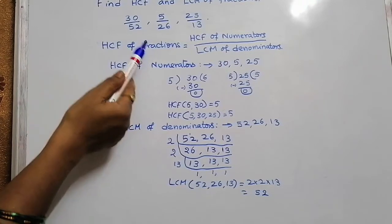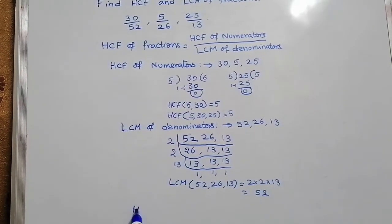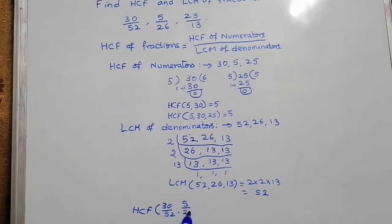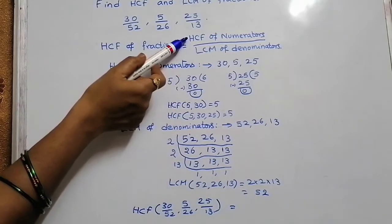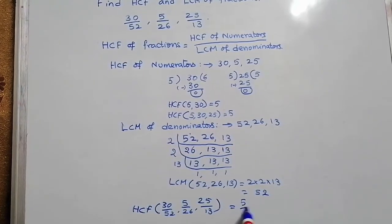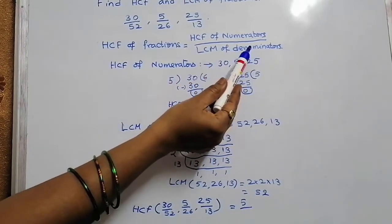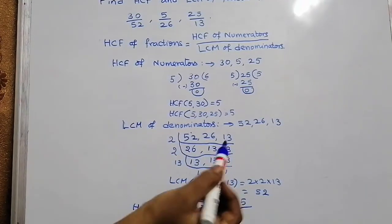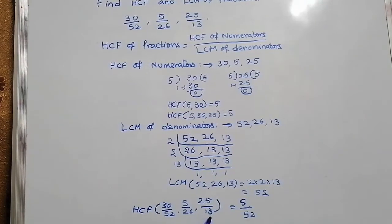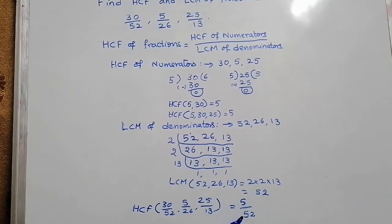Now let us write the HCF of these fractions. HCF of 30/52, 5/26, and 25/13 is equal to — substituting in the formula — HCF of numerators is 5, and LCM of denominators is 52. So HCF of these fractions is 5/52.